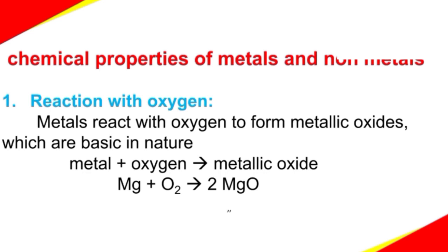Metal plus oxygen gives metallic oxide. Here is an example. Magnesium, when it is reacted with oxygen, it gives magnesium oxide. In the form of an equation, Mg plus O2 gives 2MgO.